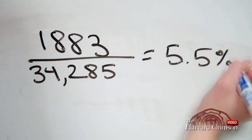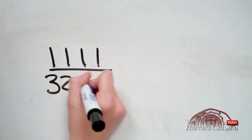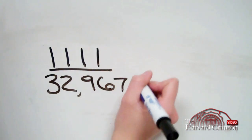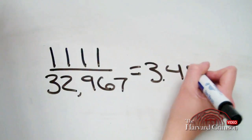The admit rate for regular decision candidates is even lower. The estimated number of regular decision admits over the number of those applications being considered under regular decision gives an admit rate of 3.4%.